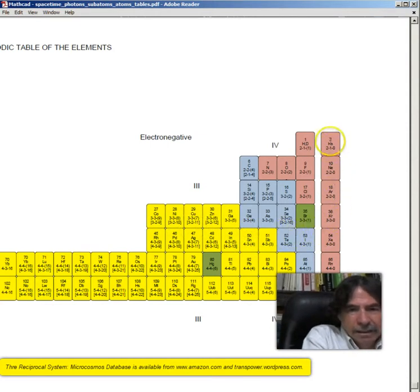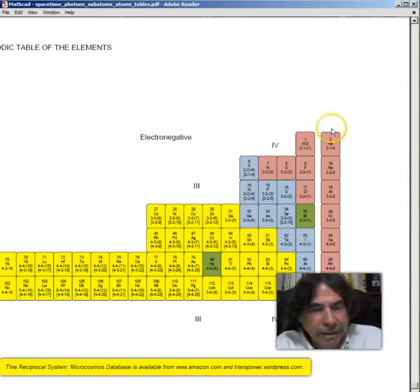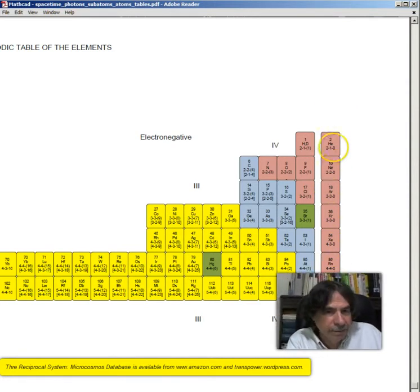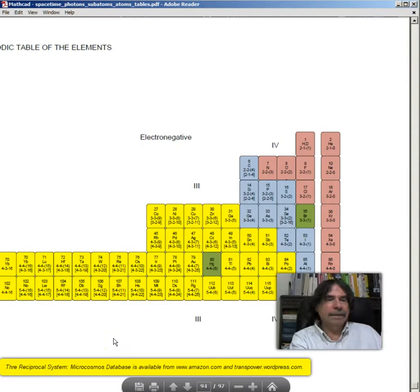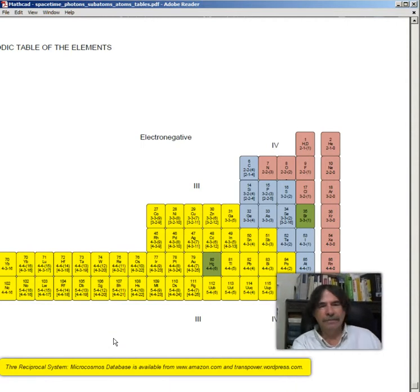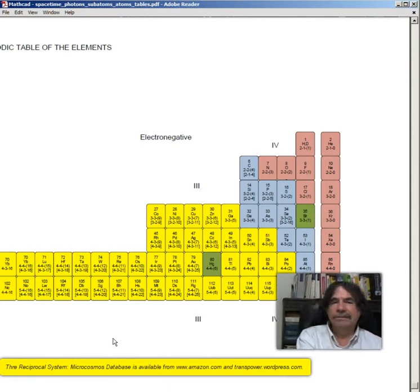And you can see how the displacements invert in this other half. They become displacements actually in space, rather than in time. Which means that the electric rotation is above node. Again, it goes all the way down. And then we come to the node elements here in this column, and they all have zero electrical displacements. So they're not apt to combine with other elements.